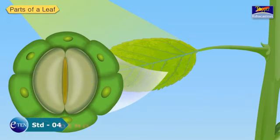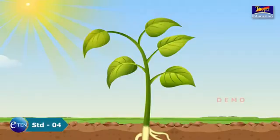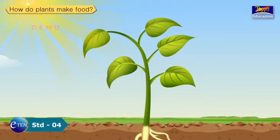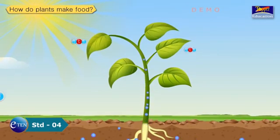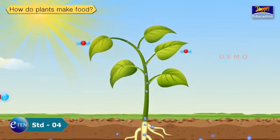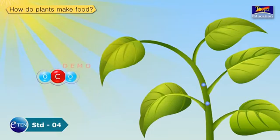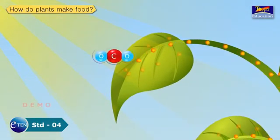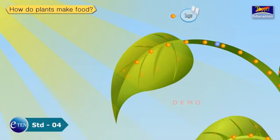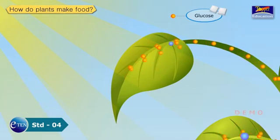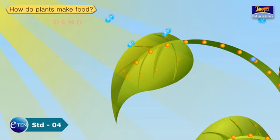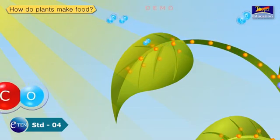How do plants make food? Plants make food with the help of carbon dioxide from air and water absorbed by the roots and carried through the stem to the leaves. When sunlight falls on the leaves, it is absorbed by the chlorophyll for making food. The food prepared is in the form of simple sugar, also known as glucose. After food is prepared, oxygen and water vapor are given out through the stomata.